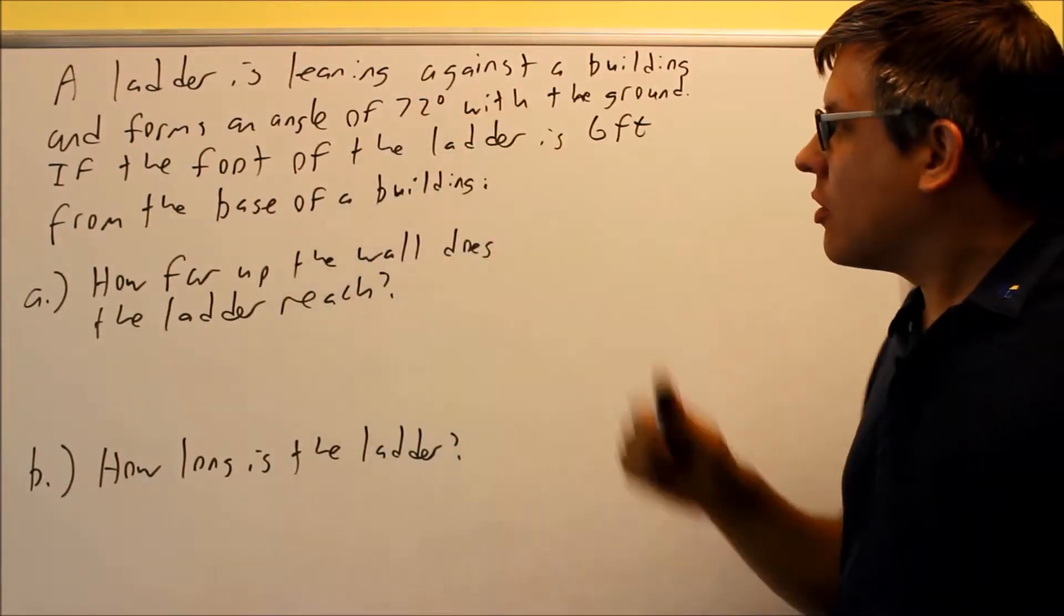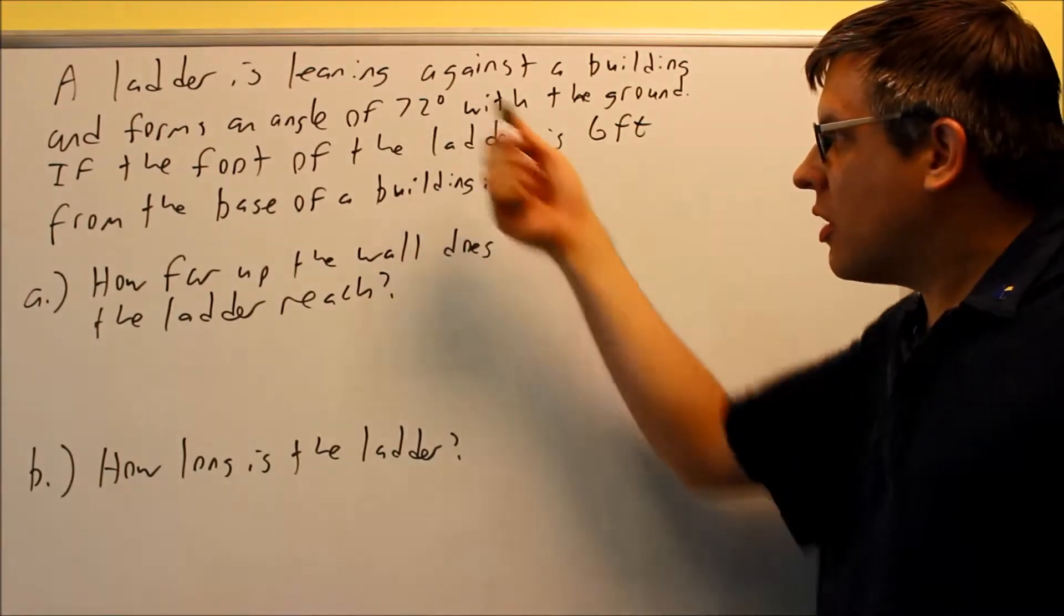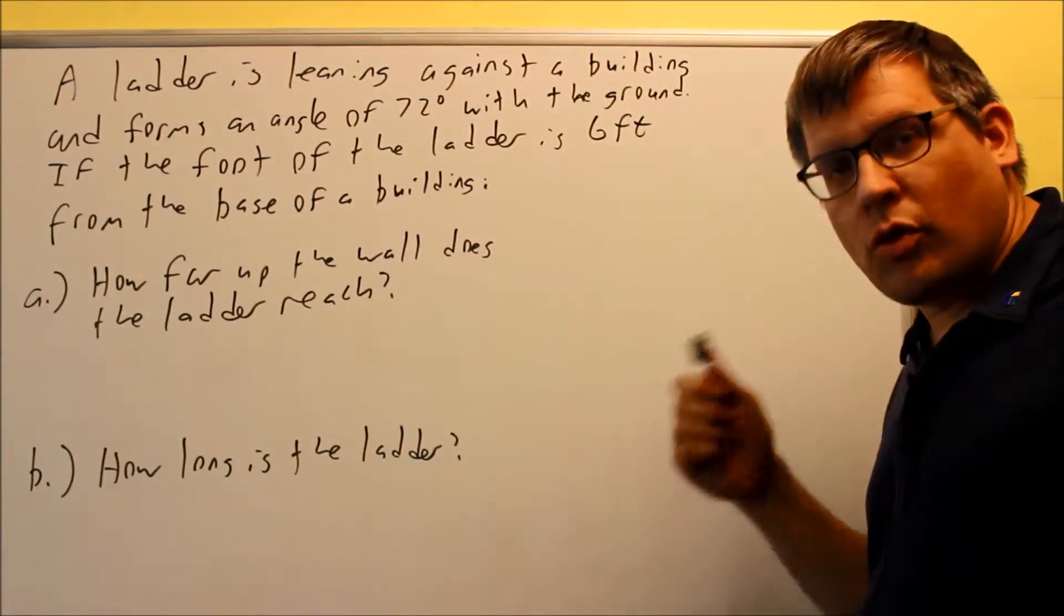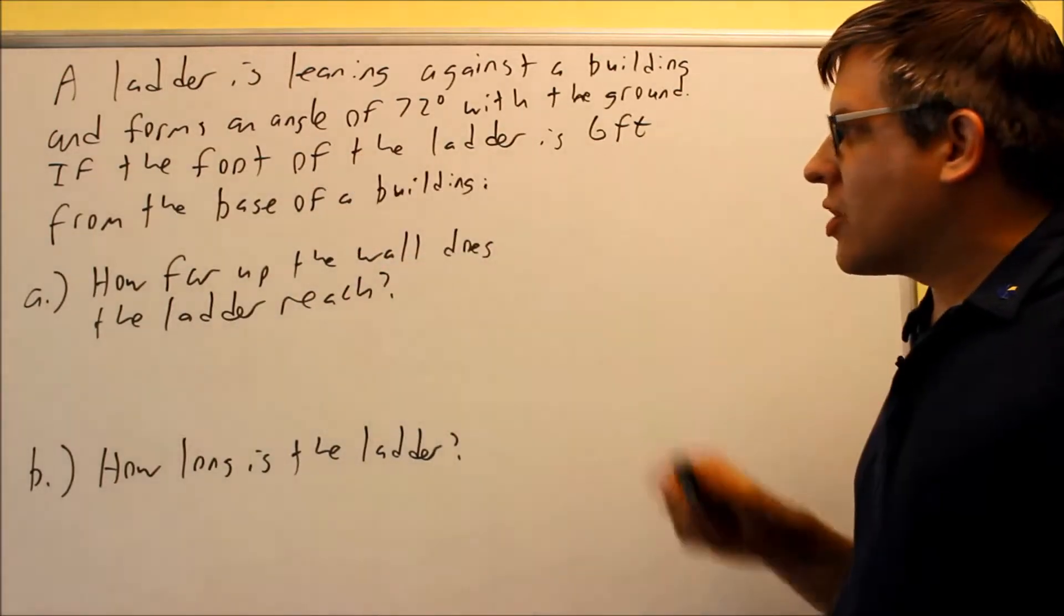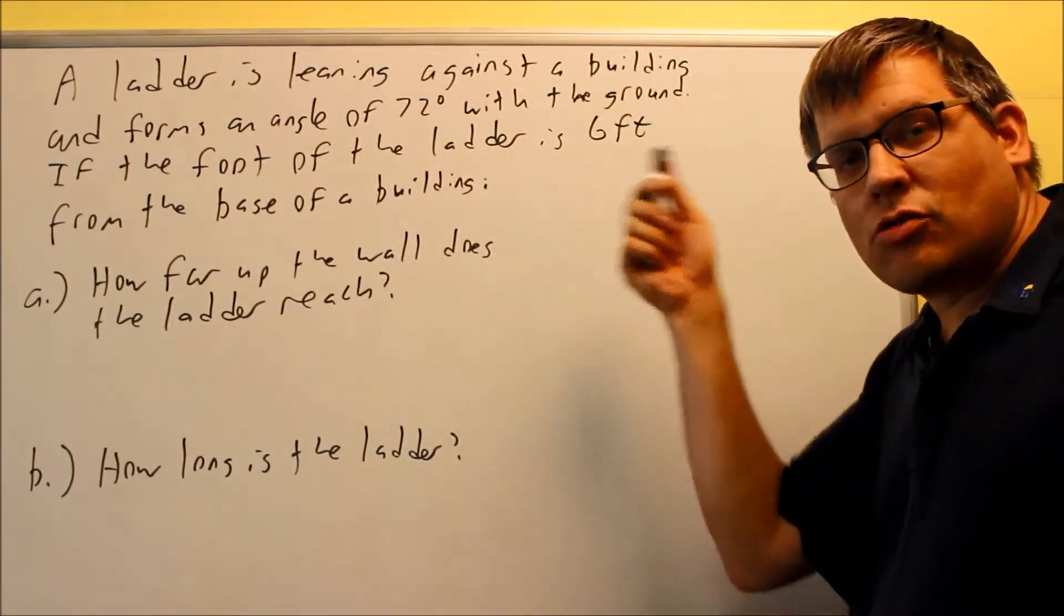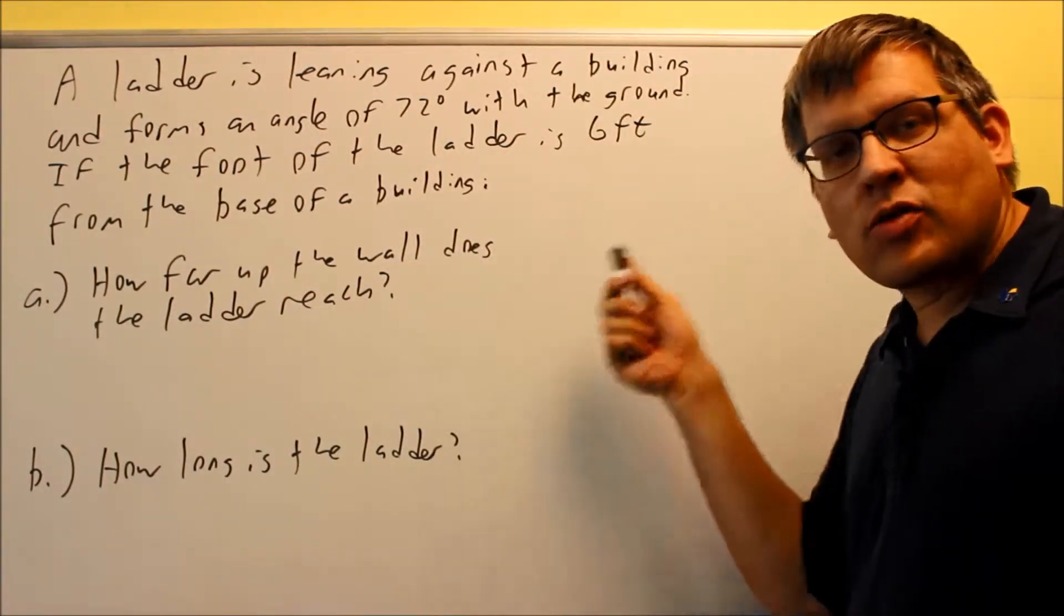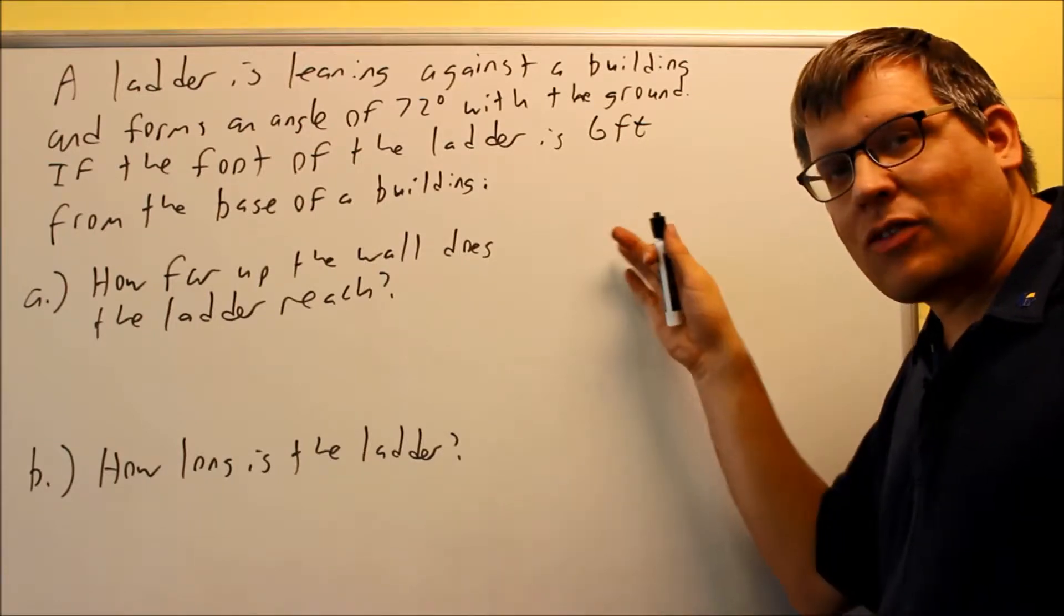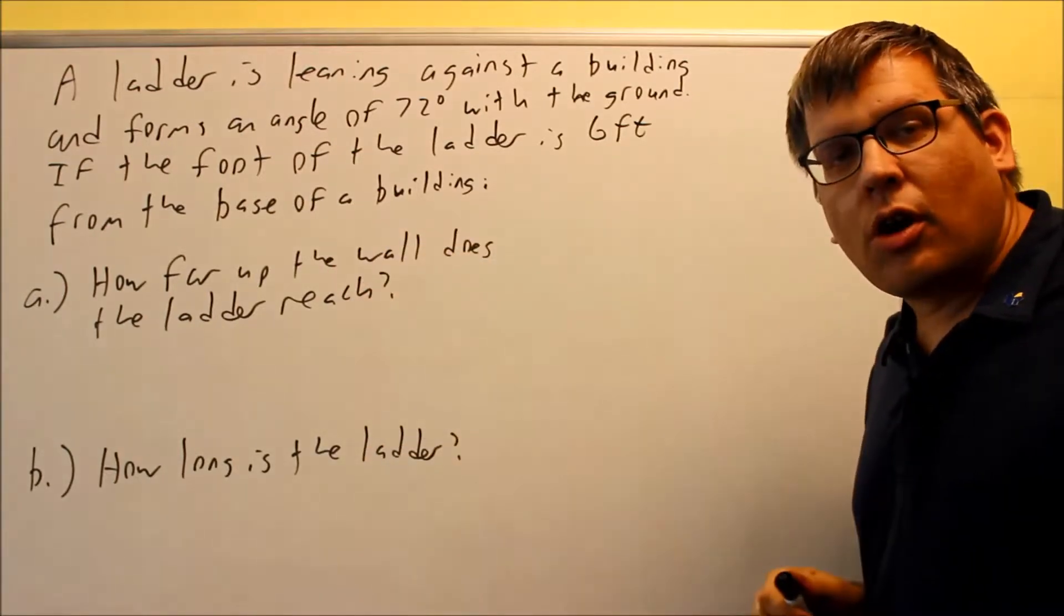It says that we have a ladder leaning against a building and it forms an angle of 72 degrees with the ground. Then it says the foot of the ladder is six feet away from the base of the building. So I need to draw a picture that describes all this information because I need to have the picture in order to answer part A and part B.